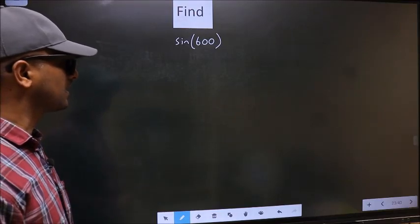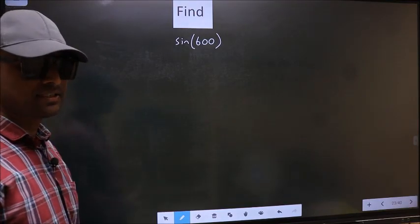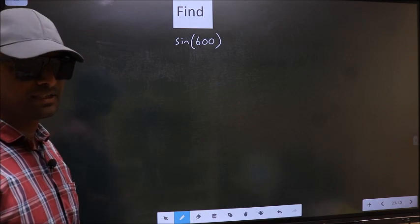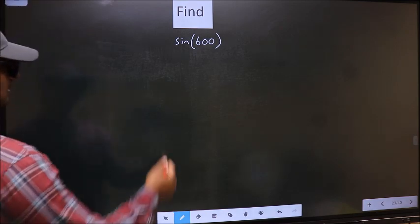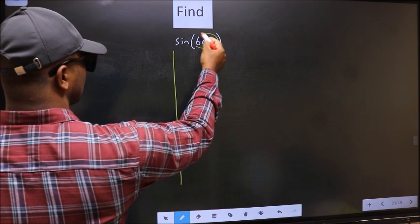Find sine of 600 degrees. To find this, we should follow this method. Here we have 600.